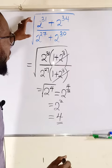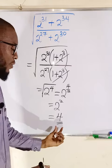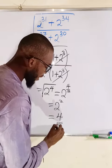This means that the whole of this square root, if simplified, you're going to obtain 4 as the final answer.